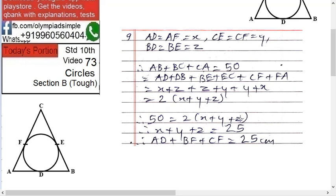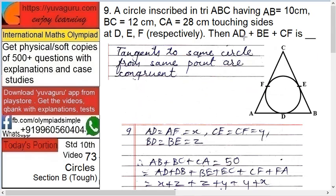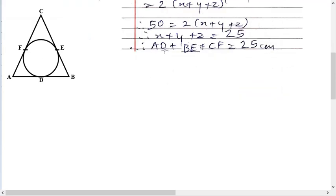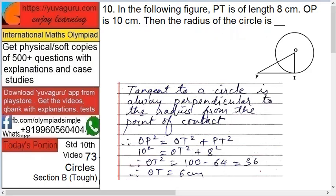But what we want is AD plus BE plus CF. If you put the values, AD plus BE plus CF equals 25.